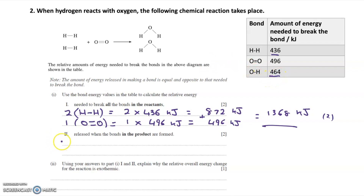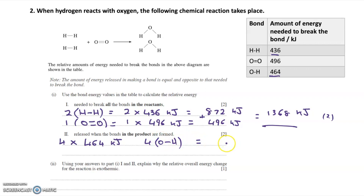Part two asks you to calculate the energy released when the bonds in the products are formed. I have two water molecules and each water molecule contains two O-H bonds, so in total I have four O-H bonds. To work out the energy released: 4 × 464 kJ = 1856 kJ. So 1856 kJ gets two marks.